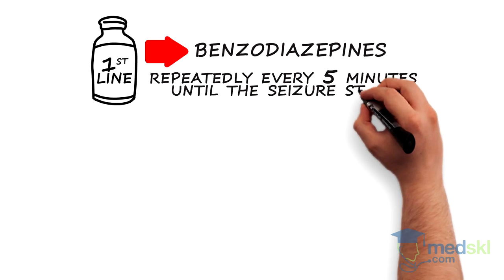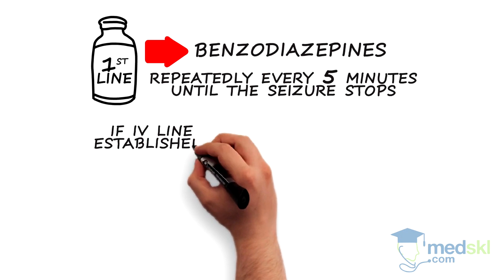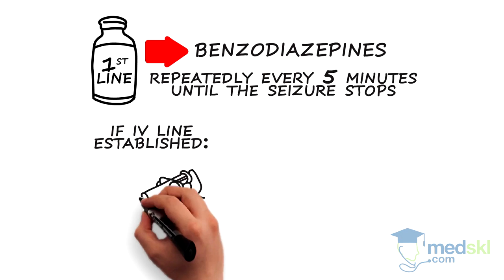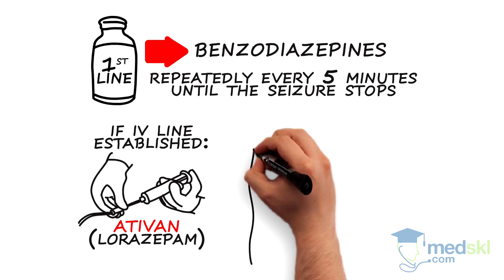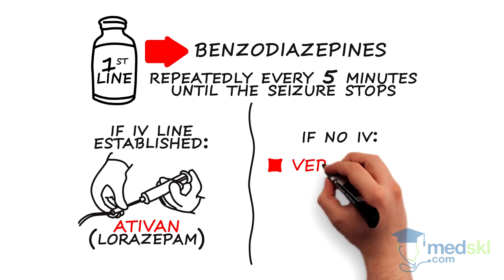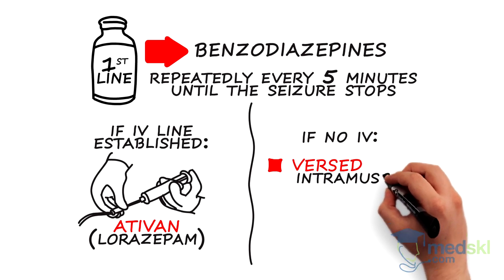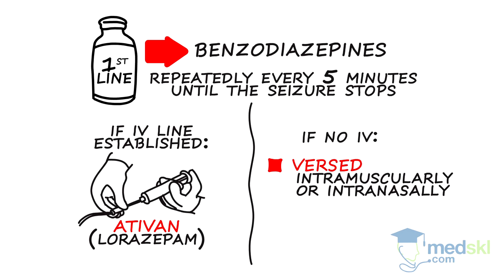If you are lucky to have an intravenous line established, Ativan or lorazepam is your drug of choice. If you do not have an IV line, you can give Versed or midazolam intramuscularly or intranasally. Rectal Valium or diazepam is an alternative option.